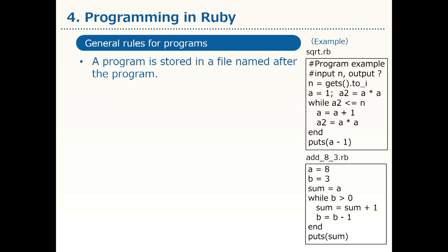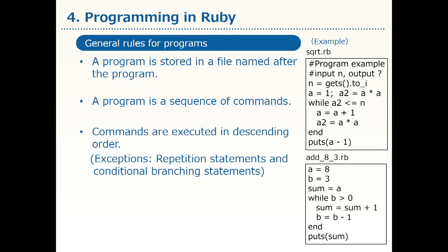That is located in the memory. Next, a program is a sequence of commands. A sentence written in each line is a command, which may look like a mathematical formula sometimes. A program is a sequence of such commands given line by line. The computer executes these commands line by line from top to bottom. There are exceptions — repetition statements or conditional branching statements can change the order — but otherwise the computer generally executes commands in descending order.